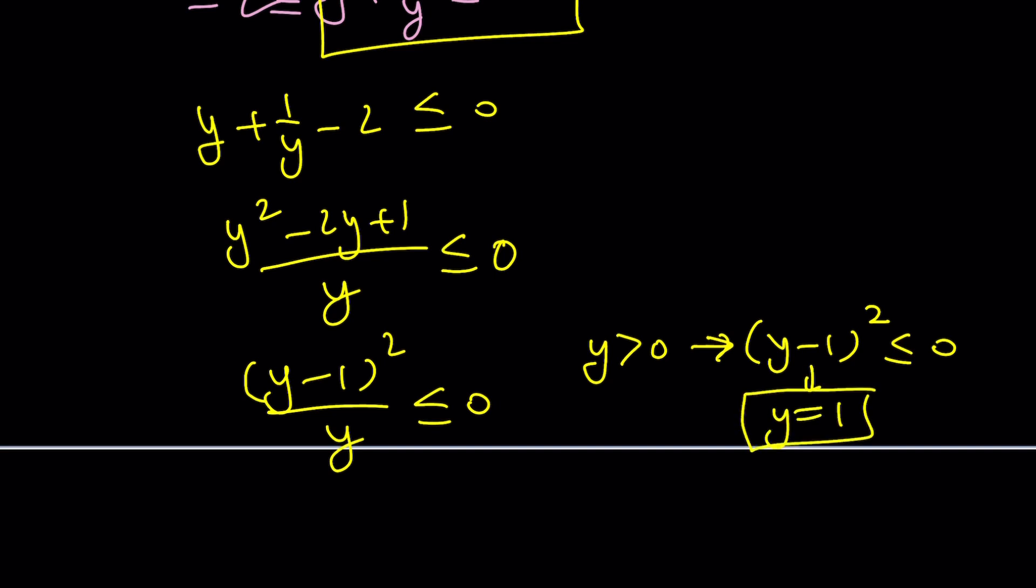And Y equals one satisfies Y is greater than zero, so we get a check on that one. Y equals one is a valid solution. You see, by using an inequality, we can solve an equation, which is great, right?